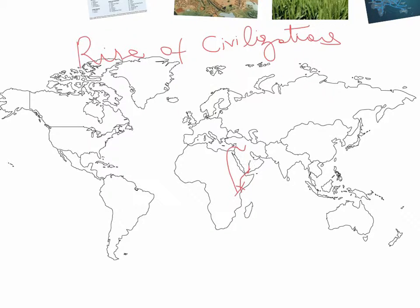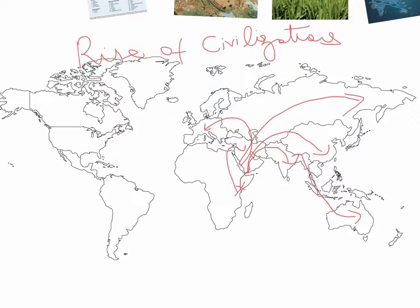And then from there, they took one route into India. Another group took the route to China. A third group looked into Europe and a fourth into North Asia. And from these places, they also continued to keep moving through the land bridges and possibly reached Australia and also the Americas.